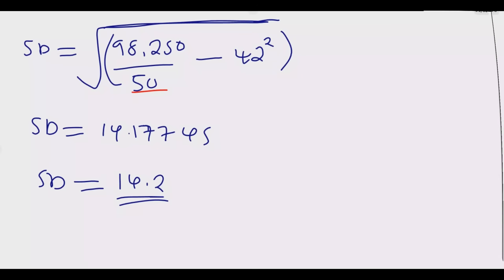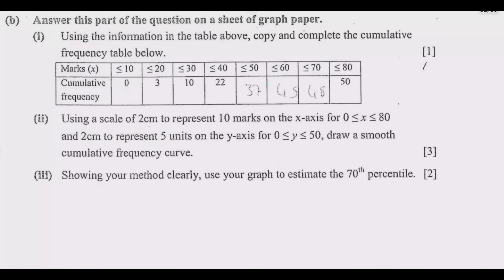Now let us move to question B. It says: on a sheet of graph paper, using the information in the table above, copy and complete the cumulative frequency table. This question always comes up and it is typically one mark because it is straightforward. The table is identical to the frequency table we have been using.